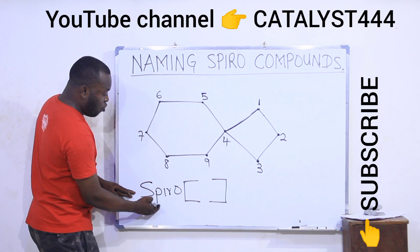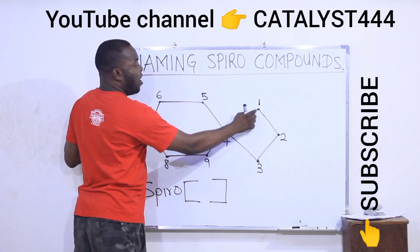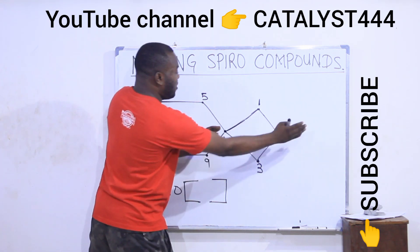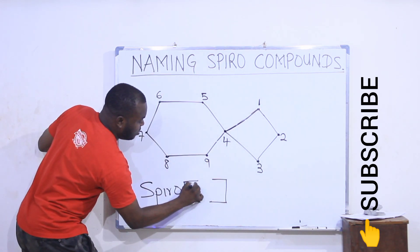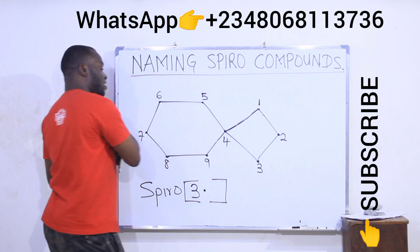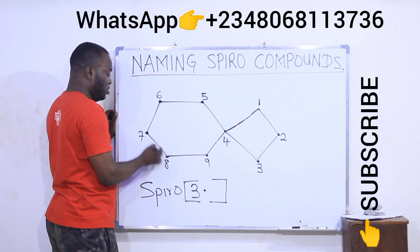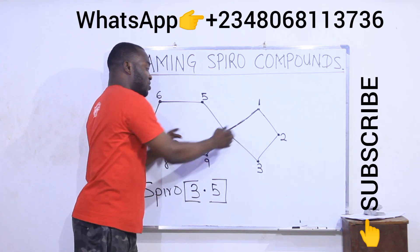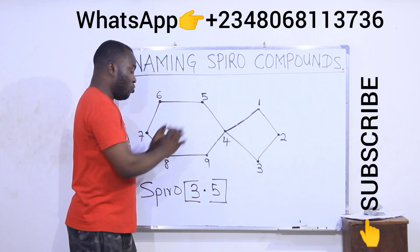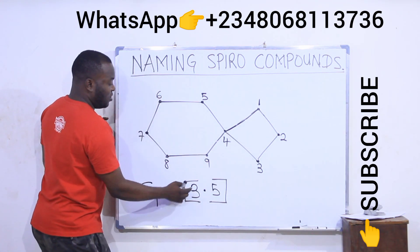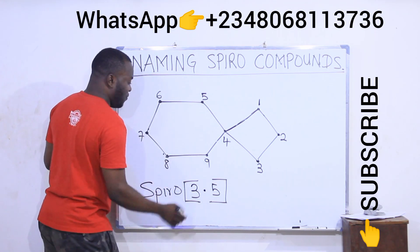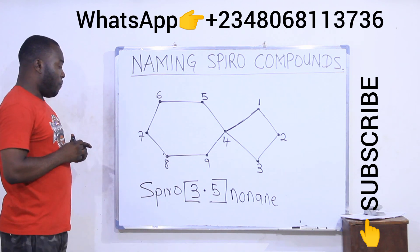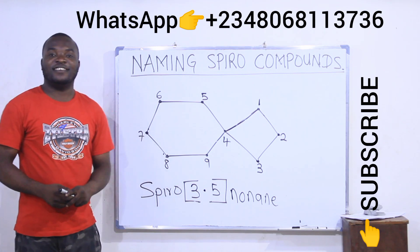So I will say 'spiro,' open my brackets. On the lower side I have one, two, three carbons — that is three. Put a dot. On the higher side I have one, two, three, four, five — that is five. Remember, the spiro carbon that connects the two rings is not included for either side; it stands on its own. So I have spiro[3.5], and the total carbons are nine, which is nonane. The name of this compound is spiro[3.5]nonane.